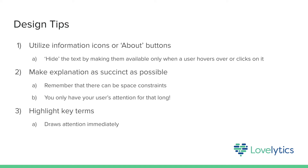Here are some design tips for when you include technical terms in your visualization. Utilize information icons or about buttons so that they can hide the text of your explanation unless users hover or click on them. Make sure you realize space constraints and the limited attention span of your users — keep your explanations brief. Finally, highlight the key terms you are using so that users are immediately drawn to them. These tips will give your dashboard a clean but effective look.